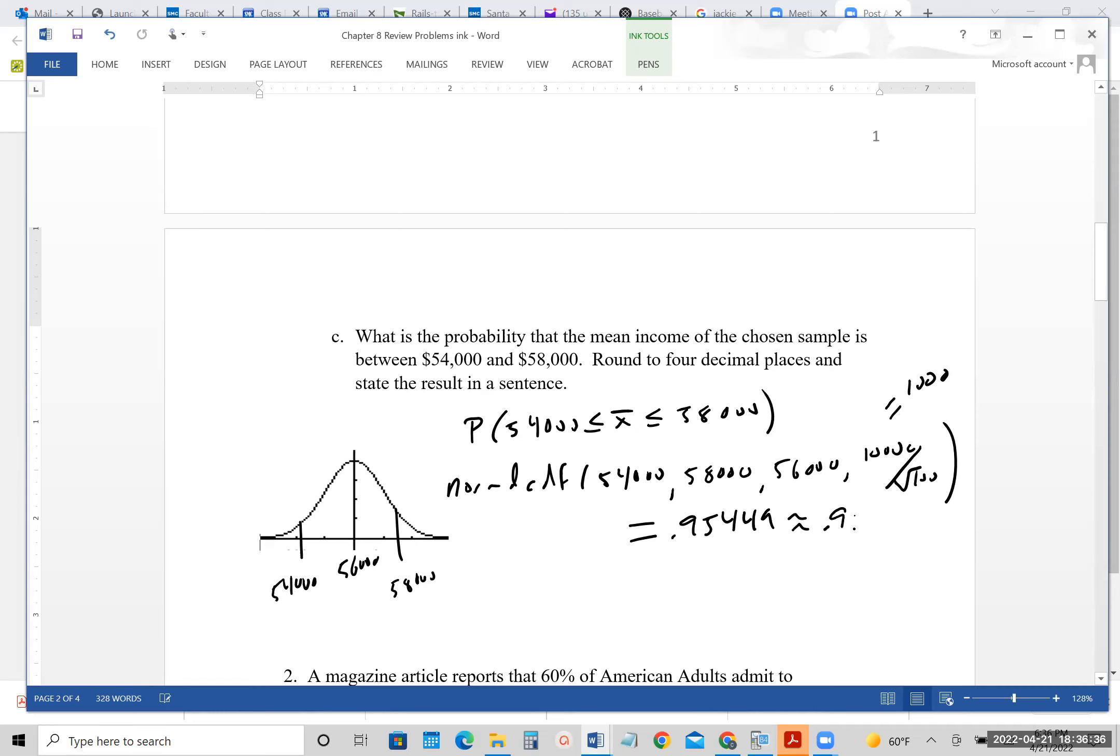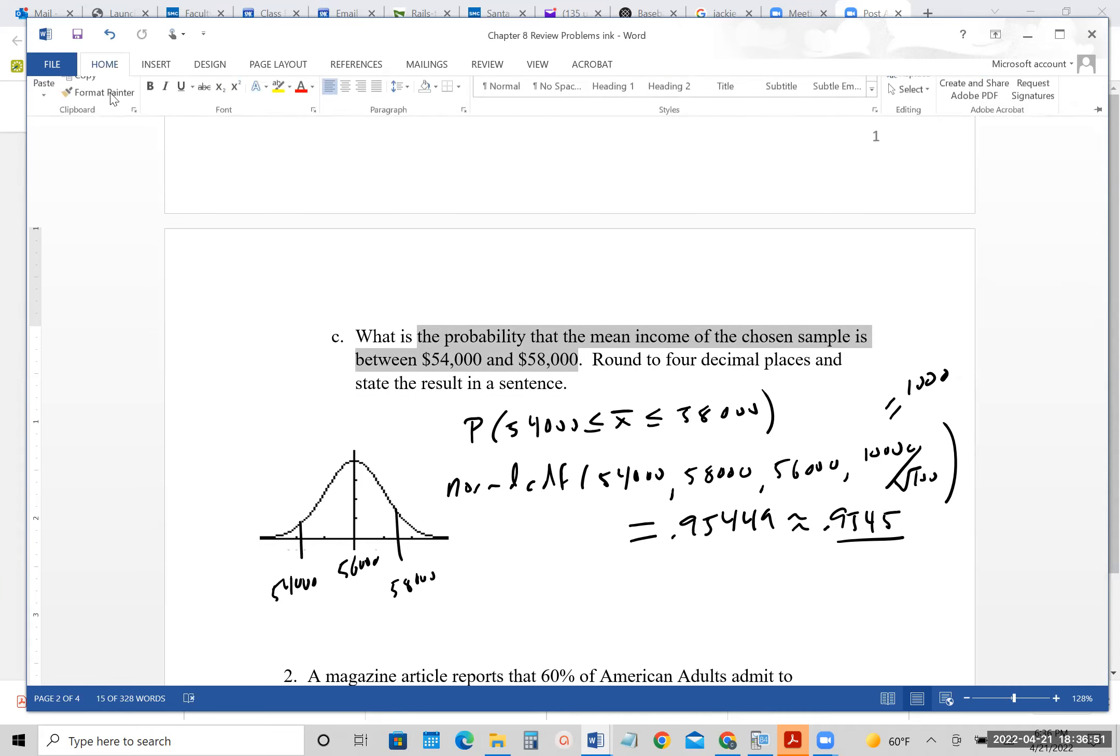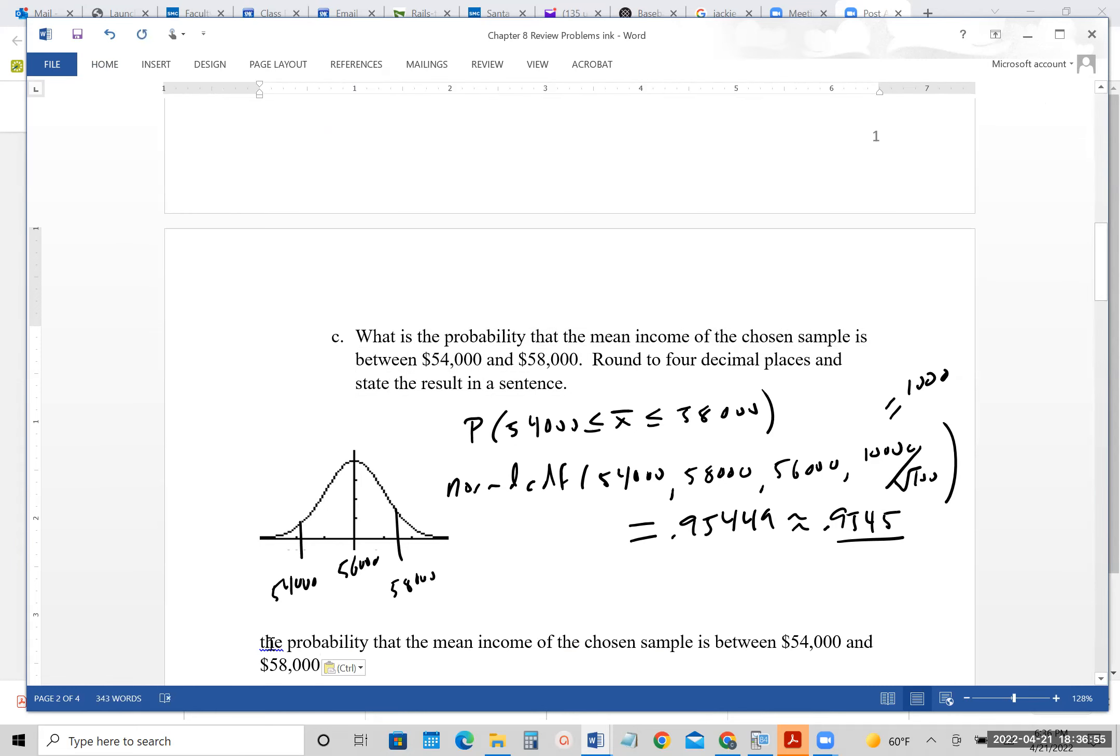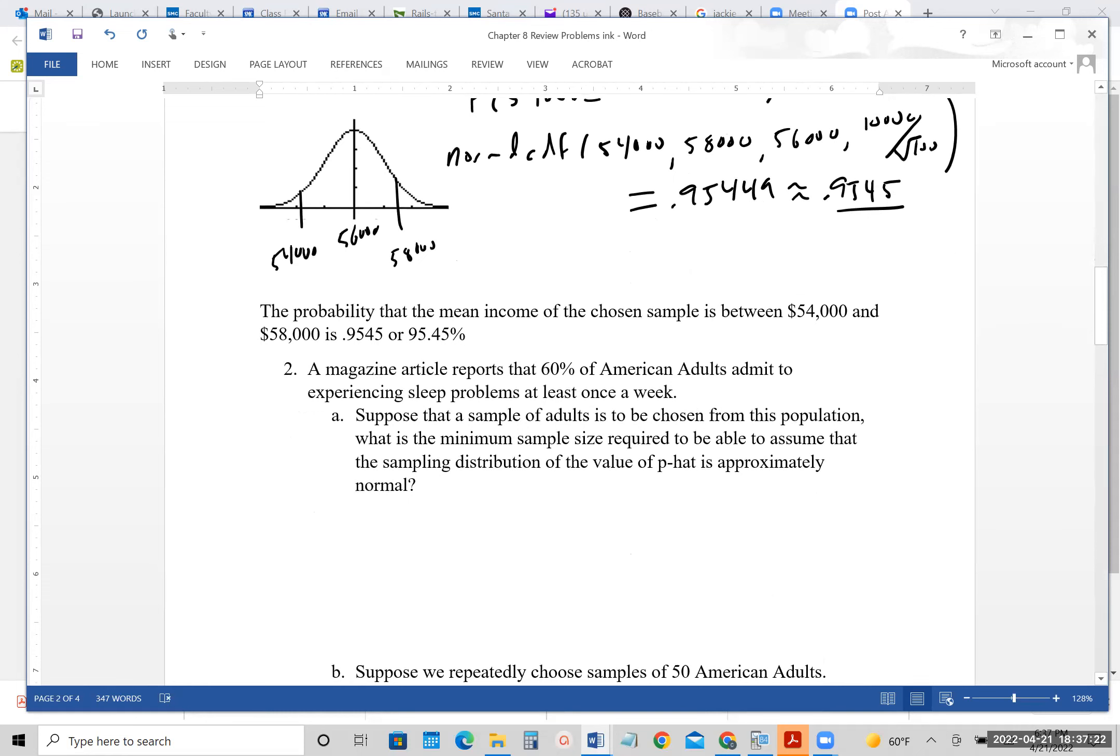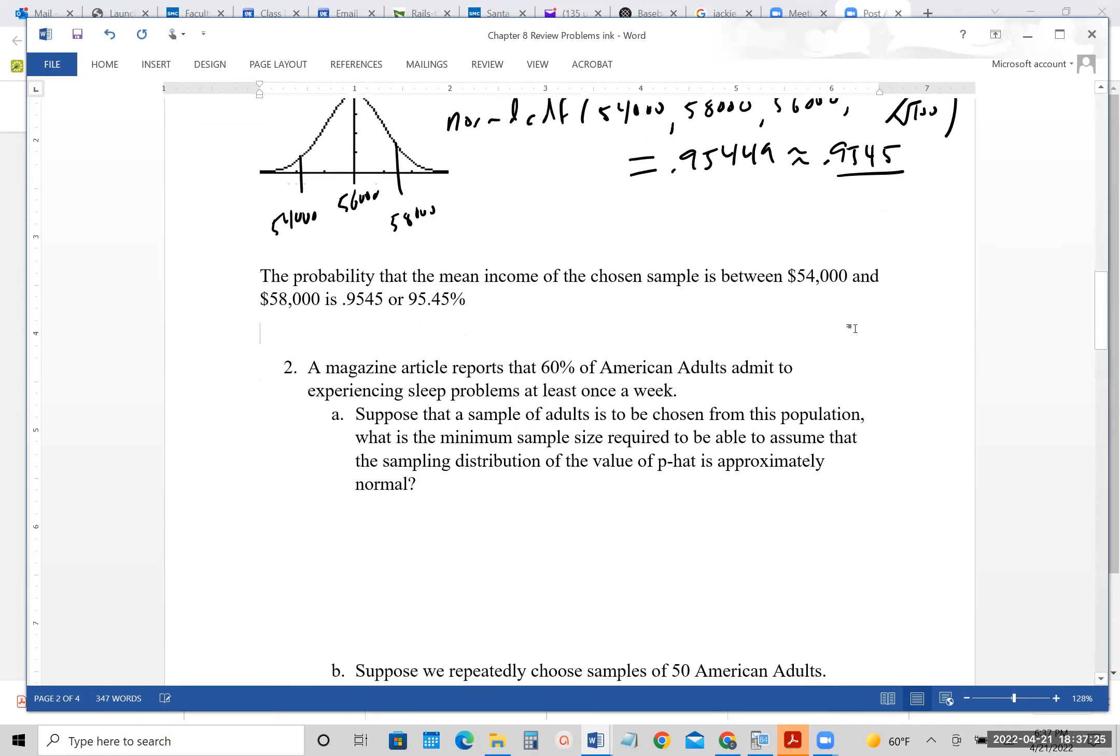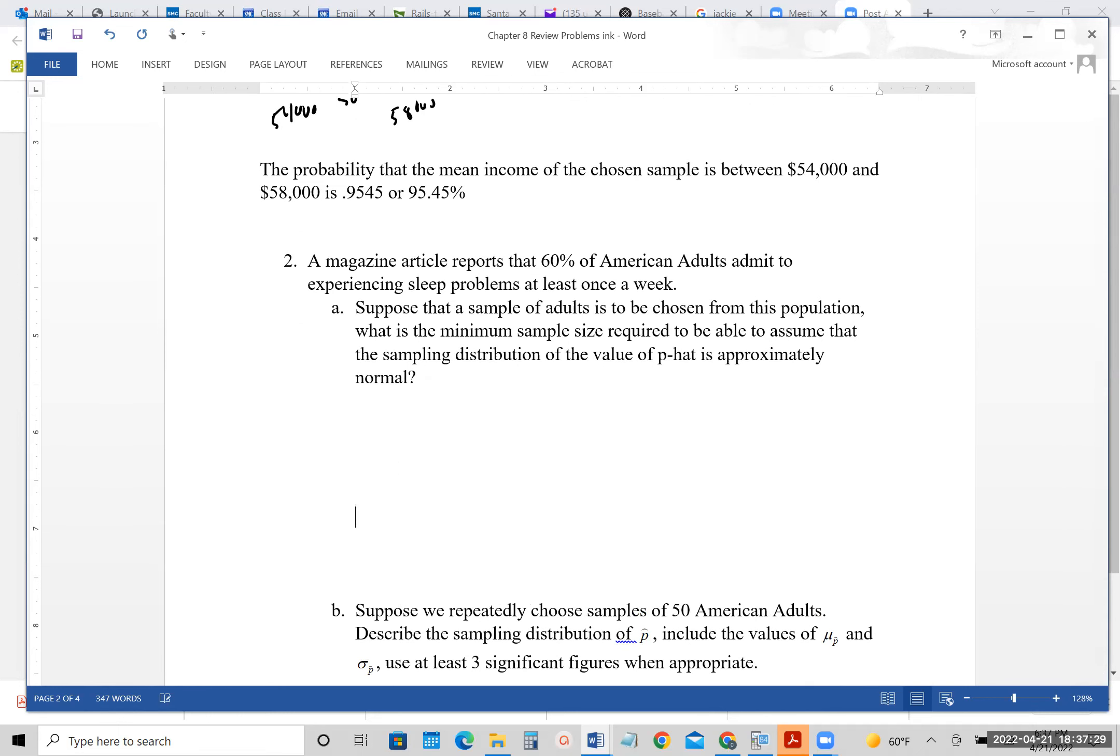So roughly 0.9545, if we round to four places, like it says, and then for the sentence, we're going to do the same thing. I'm literally copying and pasting, but instead of a question, I'm going to make it a statement. So we'll say the probability that the mean income of the chosen sample is between $54,000 and $58,000 is 0.9545, or you could say 95.45%. I'm not super picky with the rounding, as long as you round correctly. If you don't round to the exact same number of places, not such a big deal for me, but it is a big deal if it's multiple choice or it's being graded by the computer.